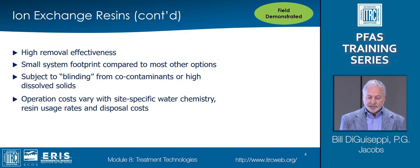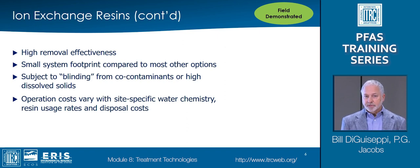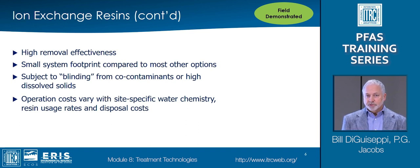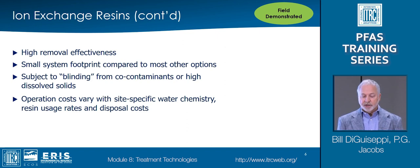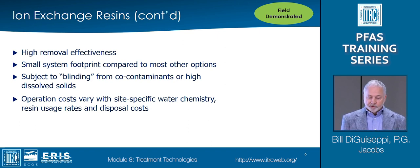Ion-exchange resins are selective for anions and sometimes for PFAS specifically, making them highly efficient per volume of media. Empty bed contact times for resin are typically in the range of two to three minutes versus carbon, which is 10 to 15 minutes. This allows a much smaller treatment vessel for the ion-exchange media, requiring a smaller footprint for the system, so the costs are much lower in that respect as well. Ion-exchange media are susceptible to blinding from co-contaminants or water that is high in total dissolved solids or other geochemical interferences. The practitioner must use care when assessing life cycle costs between carbon and ion-exchange media using a cost per volume of water treated as opposed to a cost per pound of media before breakthrough. Site-specific testing is critical because each option could be preferred at a given site.